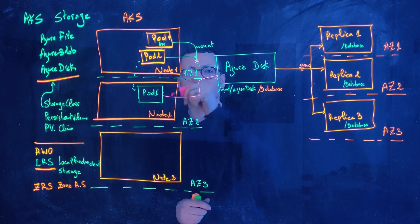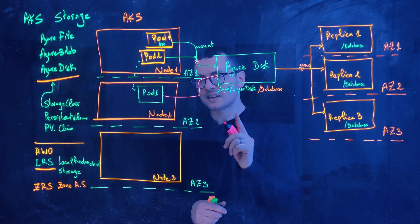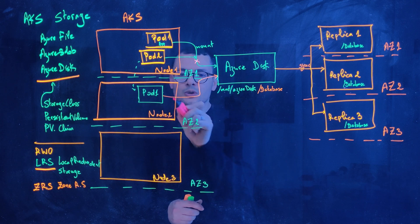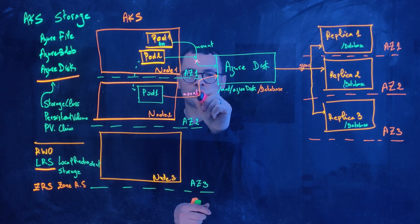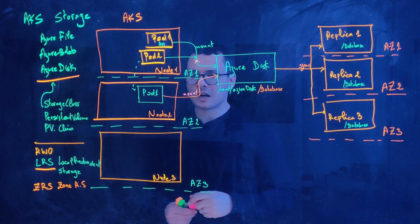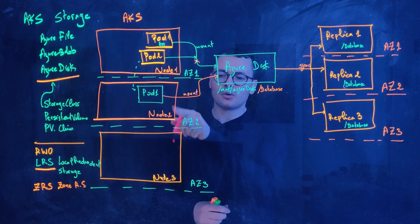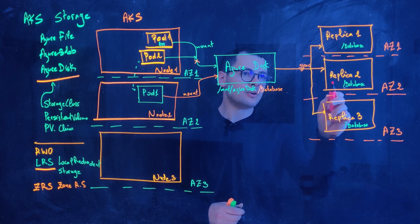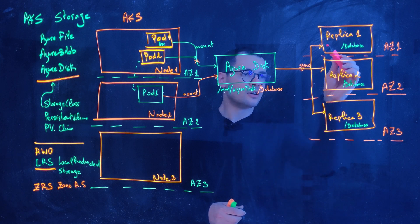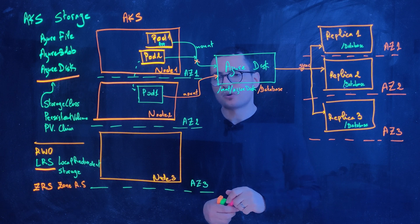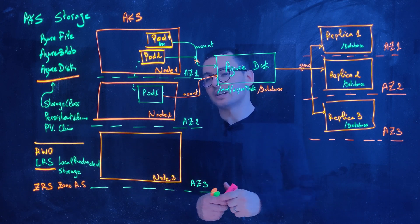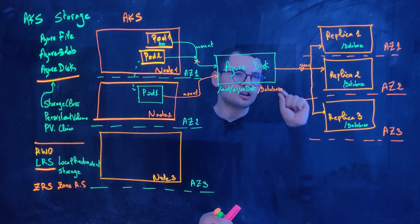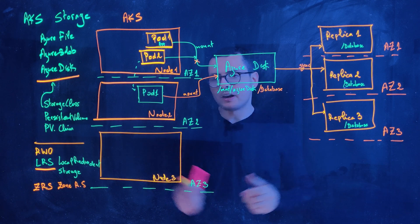With ZRS we still mount the disk to only one single node at a time, so we must first unmount it from the first node before mounting it to a second node in another availability zone. When actively used in AZ2, it will use that local replica and then replicate data to the other replicas. There is some performance degradation compared to LRS because with LRS we write within a single availability zone, but that performance overhead is generally acceptable.